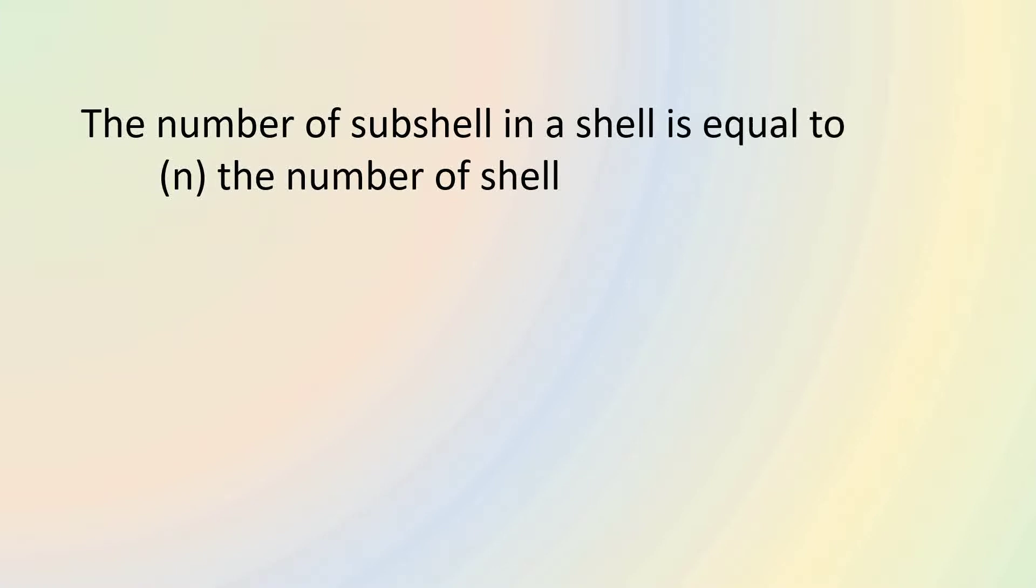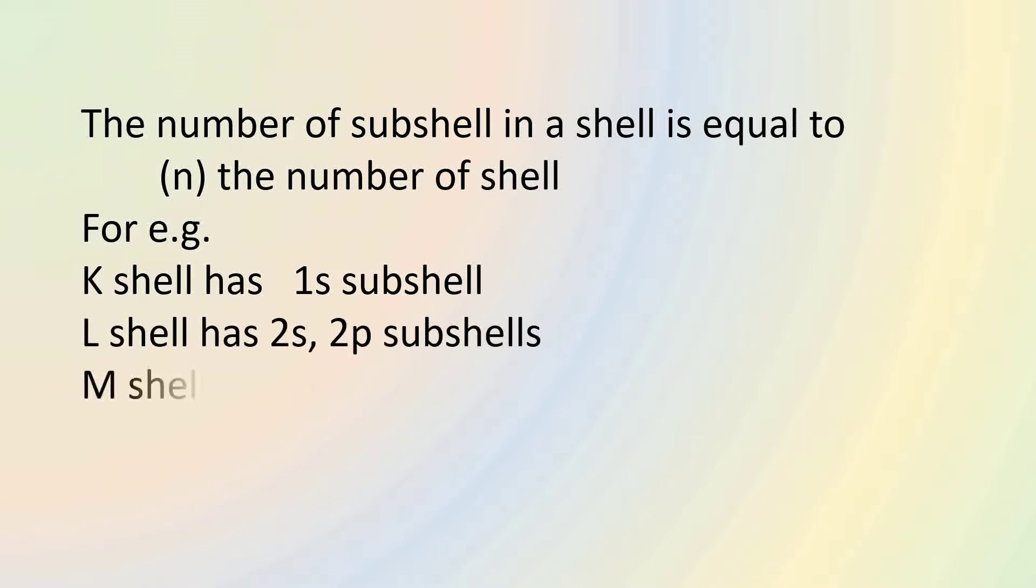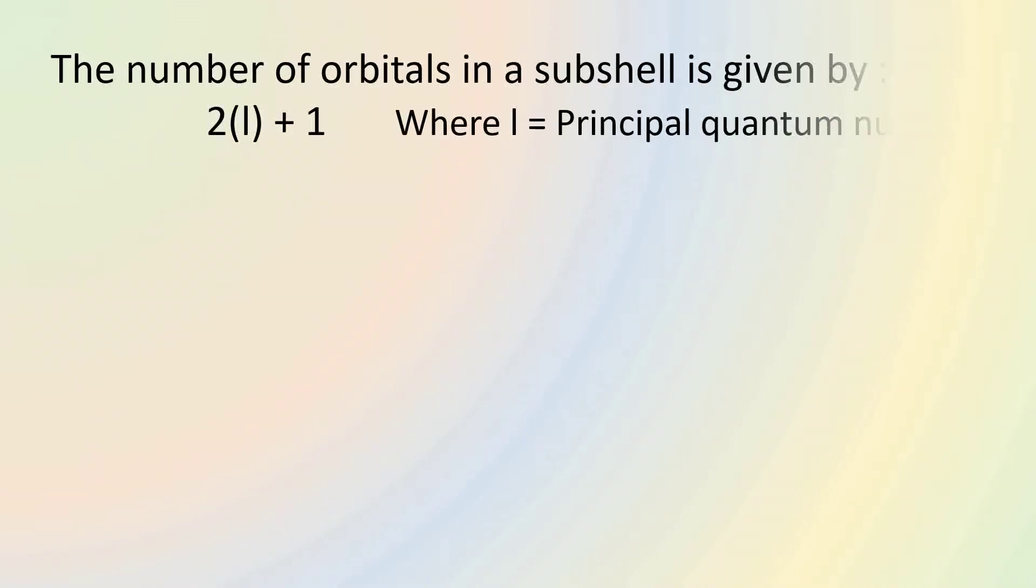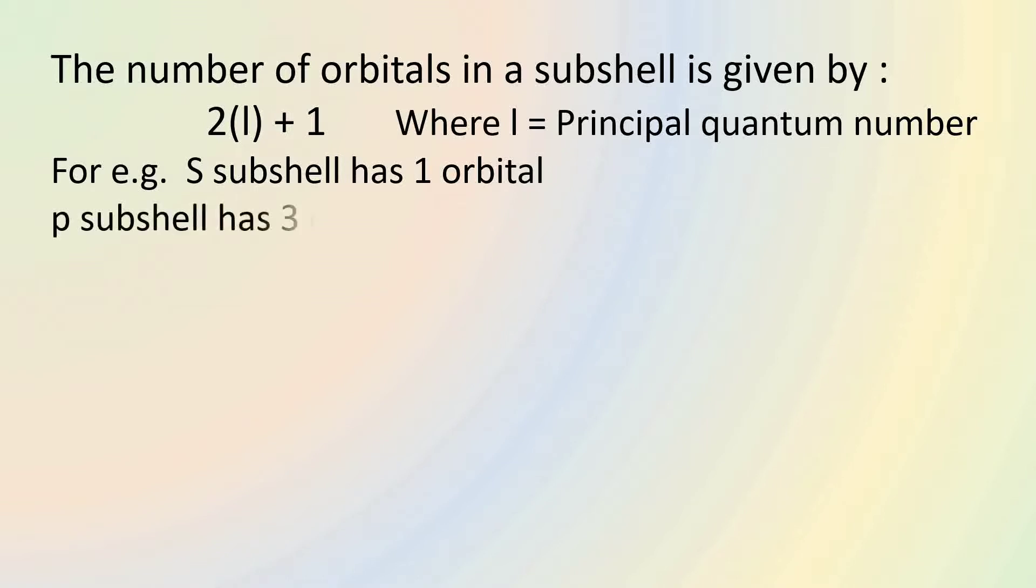The number of subshells in a shell is equal to the number of shell. For example, the first shell, K shell has 1S subshell. The second shell, L shell has 2S2P subshells. The third shell, M shell has 3S3P3D subshells. N shell has 4 subshells: 4S4P4D and 4F. The number of orbitals in a subshell is given by 2L plus 1 where L equals principal quantum number. The principal quantum number of S, P, D, F subshell is 0, 1, 2, 3 respectively. So S subshell has 1 orbital, P subshell has 3 orbitals, D subshell has 5 orbitals and F subshell has 7 orbitals.